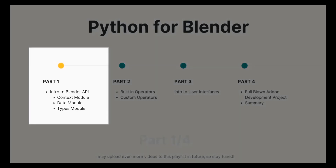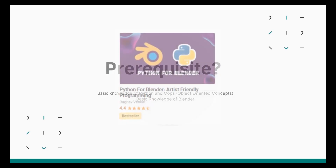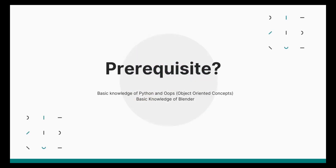This is part one and we are going to look at the Blender API. The prerequisites are a basic knowledge of Python, object-oriented concepts, and a basic knowledge of Blender. If you're not familiar with object-oriented concepts, don't worry — just follow the tutorial. For a deep dive in add-on development, I recommend the Udemy course 'Python for Blender', linked in the description.